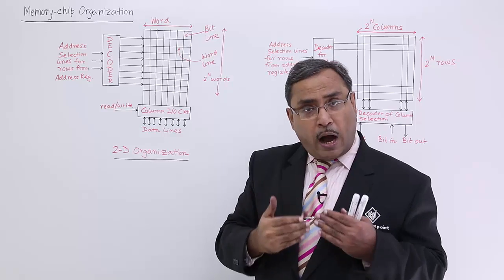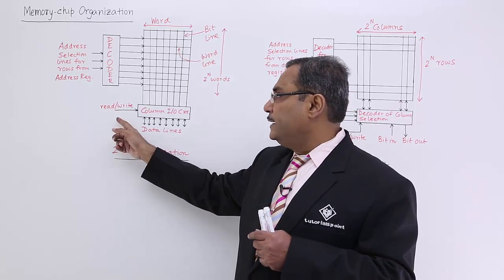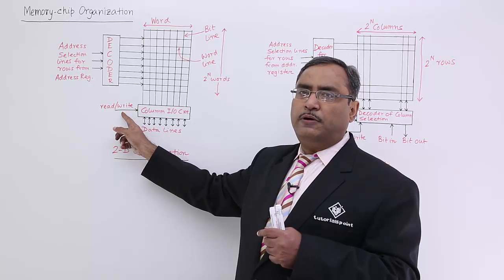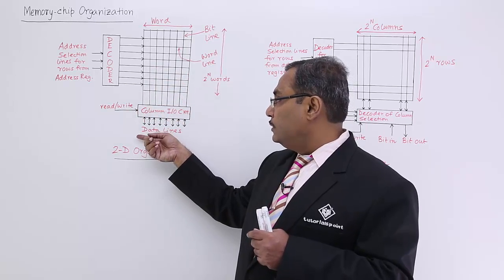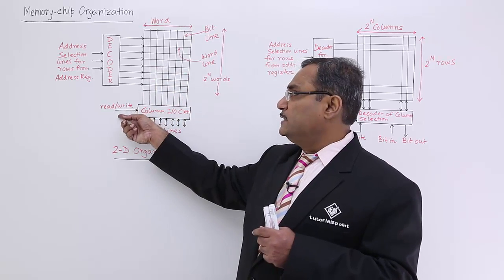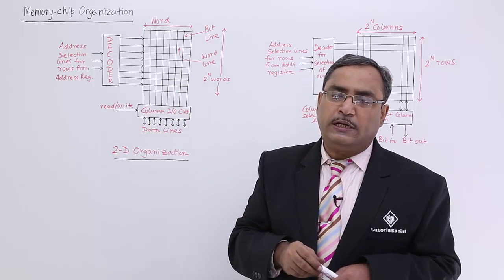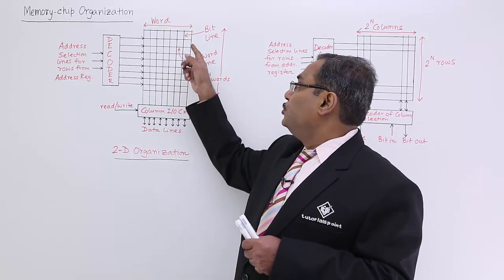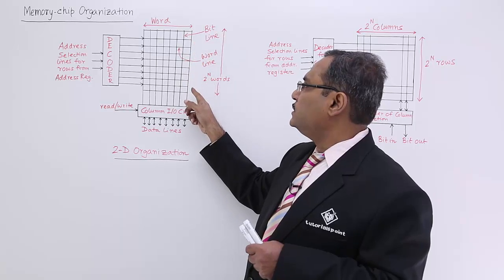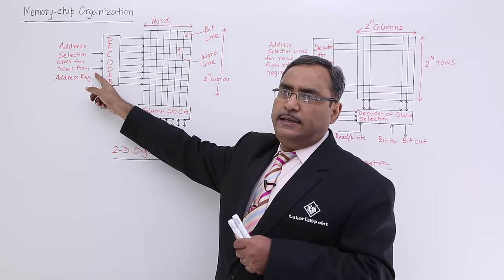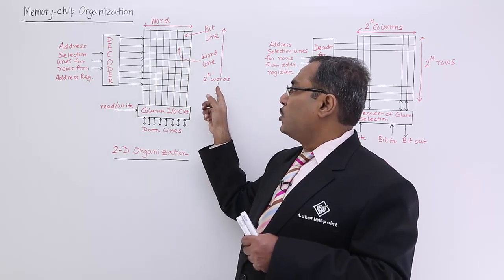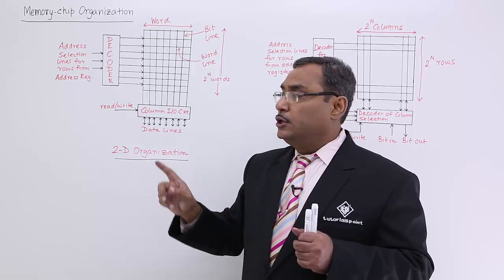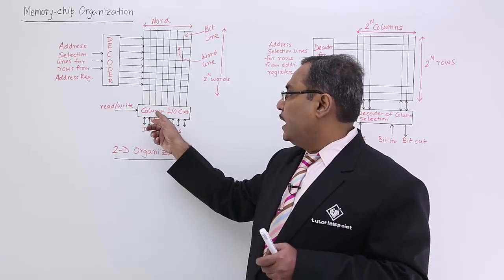Whether bits will be coming out or going in will be decided by this control line — read or write. If the control line is enabled for read, data will be coming out through the data lines. If it is write, data will be going in to the respective word to get overwritten. We can have 2 to the power of n number of words if we have n number of select lines in the decoder's input, and m number of output lines through this column IO circuit.